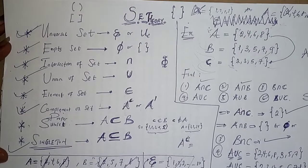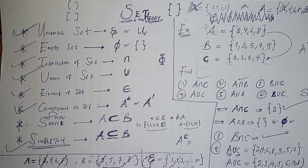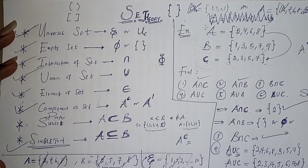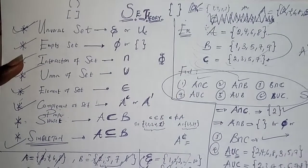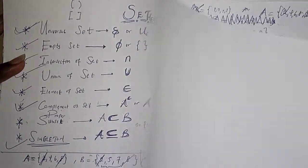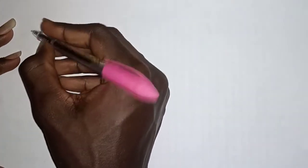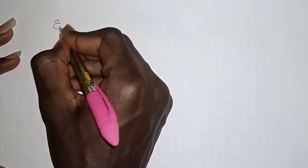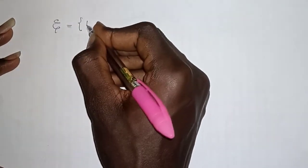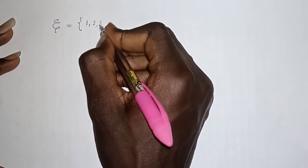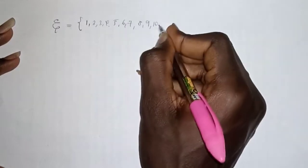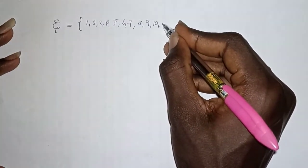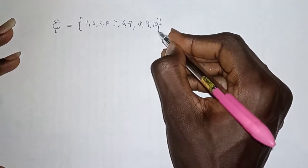Welcome guys. In continuation of our previous explanation based on set theory, I would like to form another question that is different entirely from this. Suppose we have a universal set of one, two, three, four, five, six, seven, eight, nine, ten — let's say up to twenty, but not really. Let's just leave it this way.